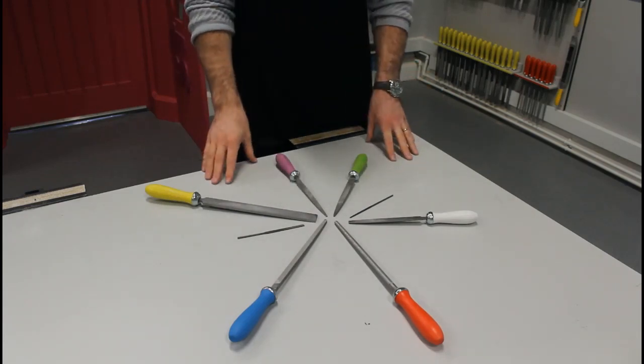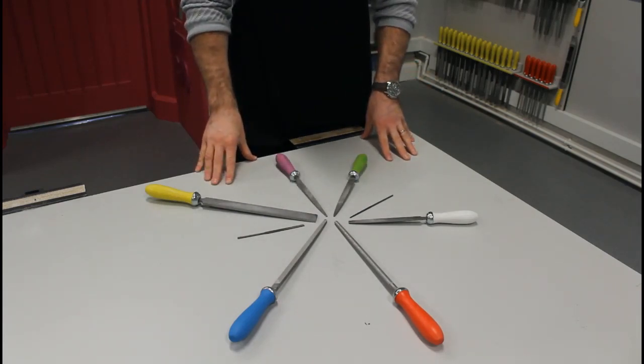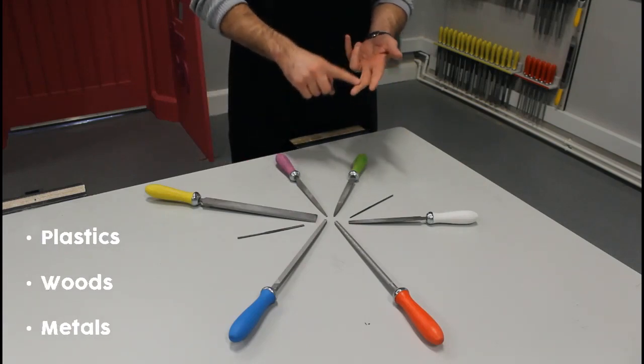These are a range of file tools that are used for waste removal. They can be used on plastics, woods, and metals.